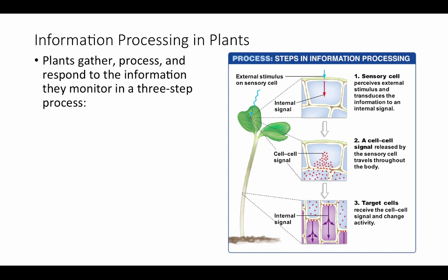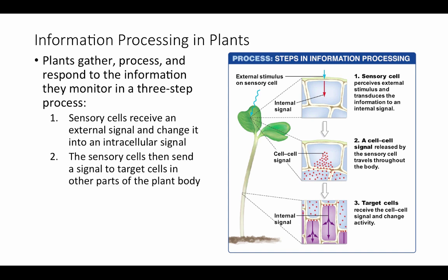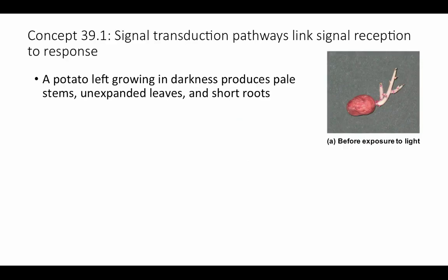Plants gather, process, and respond to information they can monitor in a three-step process. First, sensory cells receive an external signal and change it into an intracellular signal — as we saw in cell signaling, something outside the cell causes a change in shape in molecules inside the cell. The sensory cells then send a signal to target cells in other parts of the plant body for cell-cell signaling to coordinate a whole-body response. Finally, target cells receive the signal and change their activity to produce an appropriate response.